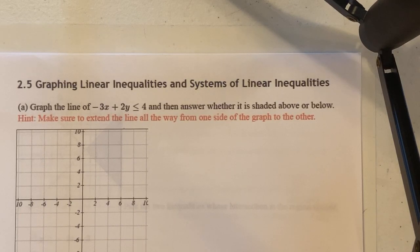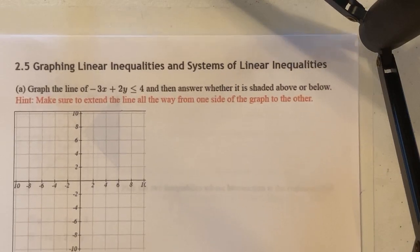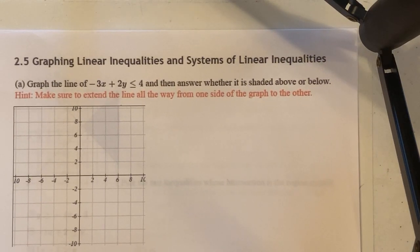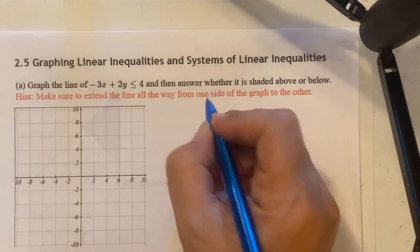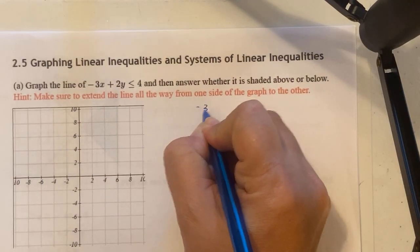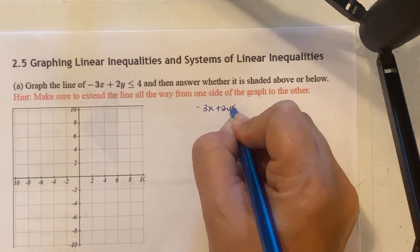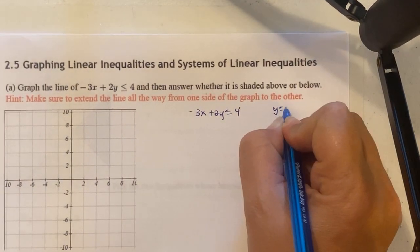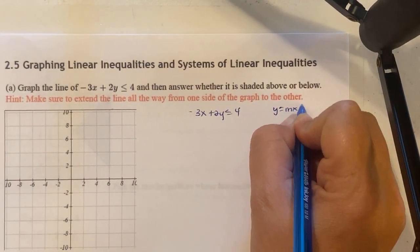They gave you a hint: make sure to extend the line all the way from one side of the graph to the other when inputting it in the iMathAS system. First thing, we take our equation — negative 3x plus 2y less than or equal to 4 — and solve it for y equals mx plus b form.